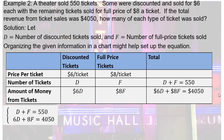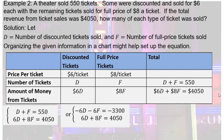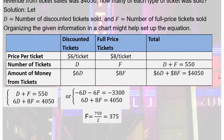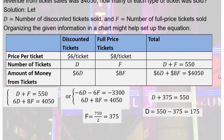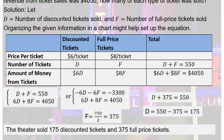Assuming you've solved the system — let's take a look. Multiply the first equation by negative 6 to get negative 6D minus 6F equals negative 3,300. Add the two equations, which gives 2F equals 750. Divide both sides by 2 to get F equals 375. The total tickets is 550, so D plus 375 equals 550, giving D equals 175. The final answer, in words: you sold 175 discounted tickets and 375 full price tickets.